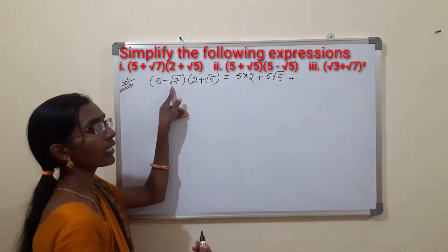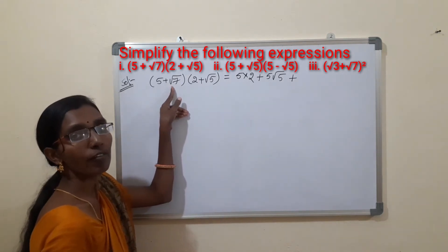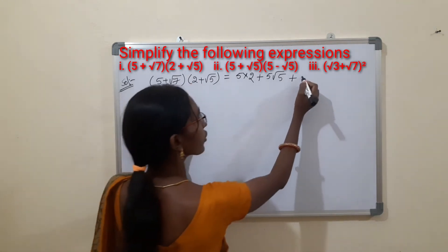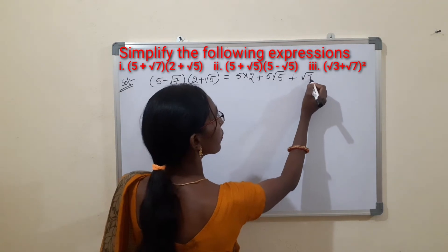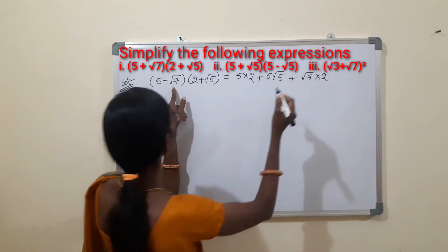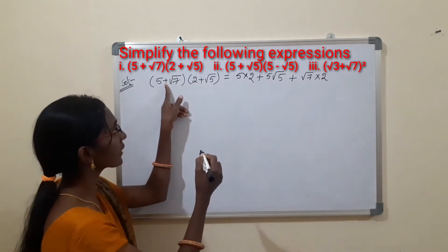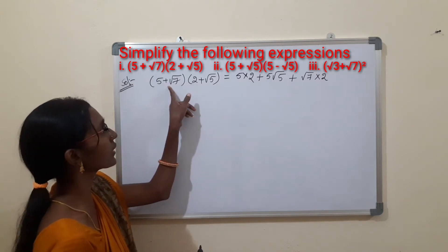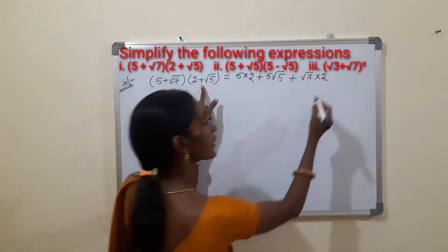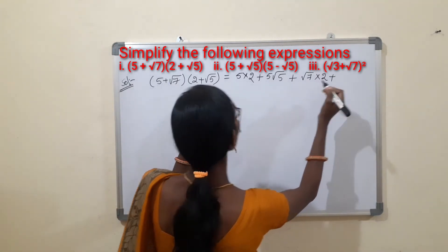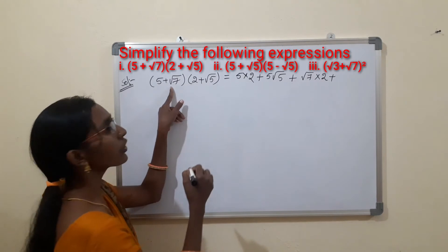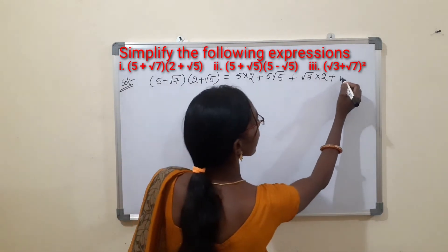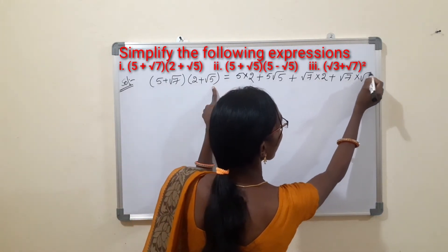Now we multiply √7 by 2, giving √7 into 2. Next, since both signs are plus, plus into plus is plus. So the last term is √7 into √5.